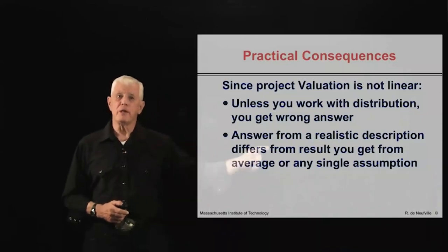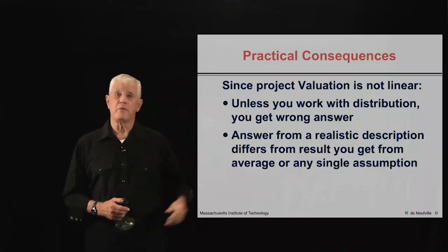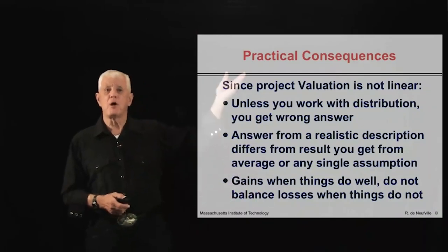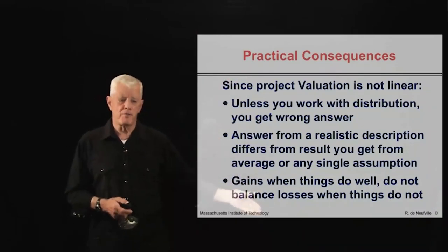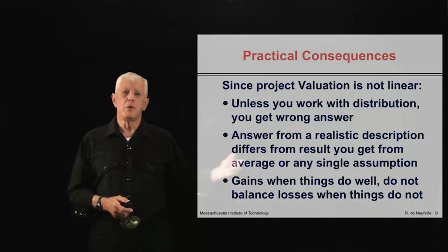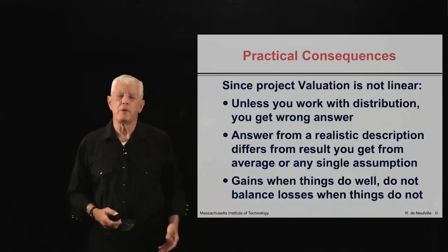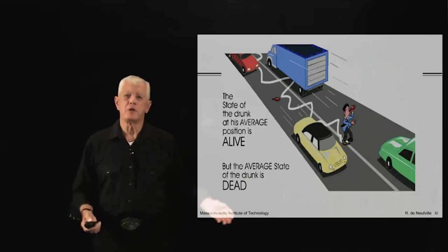The answer from a realistic distribution of what might happen differs from the result you get from the averages. So why is that? Because very often the gains when things go well do not balance off the losses when things do not.